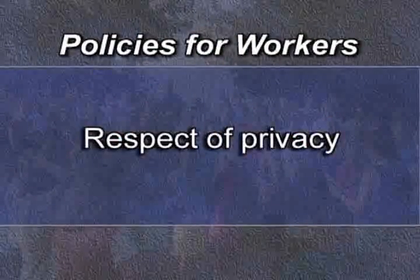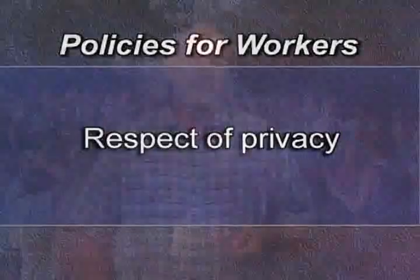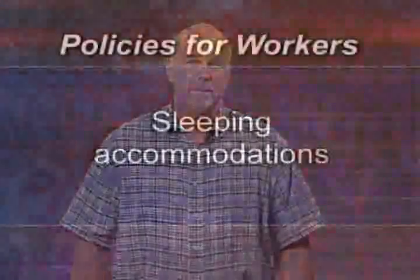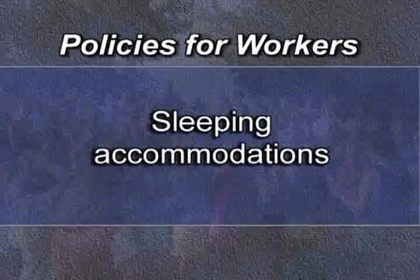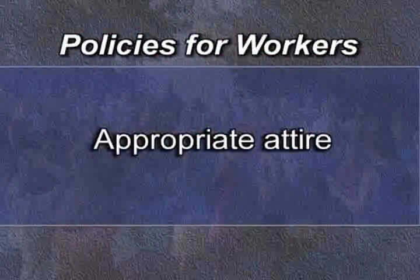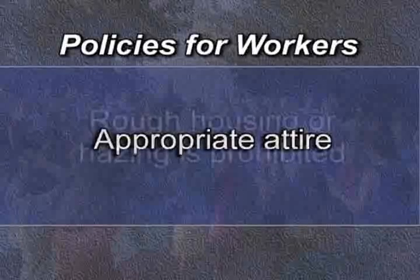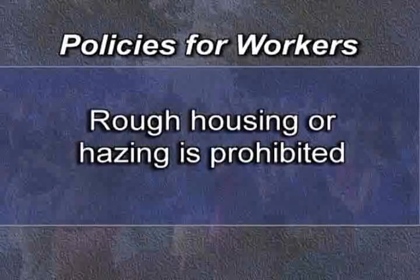Respect of privacy: adults must respect the privacy of all campers in situations such as changing clothes or taking showers. An adult would only intrude to the extent that the health and/or safety of the camper would be in question. Sleeping accommodations: adults should sleep in an area where the highest level of supervision is possible and should not isolate themselves from general view. Appropriate attire: adults will at all times dress modestly. Rough housing or hazing is prohibited. An adult will not wrestle, tickle, or in any way engage a child or teenager in an activity where the adult's hands might come in contact with the camper inappropriately.